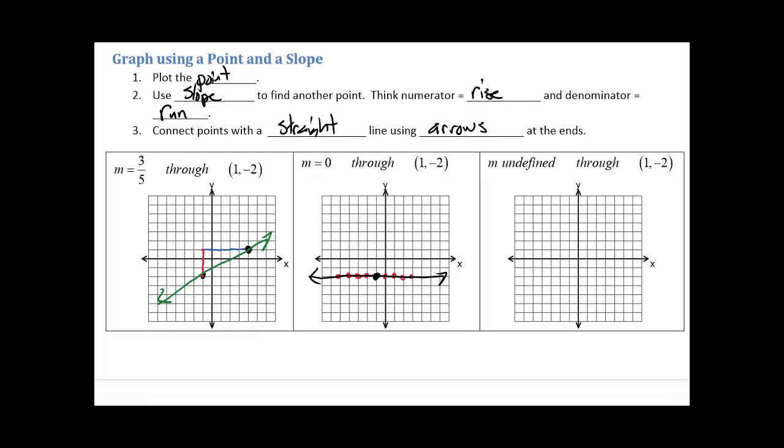And then the third case, slope's undefined, so now we're talking about a vertical line. And then plot the point. This time, I'm going to go vertically from that initial point. And all of those red dots are points on that line. And I just want to connect them.